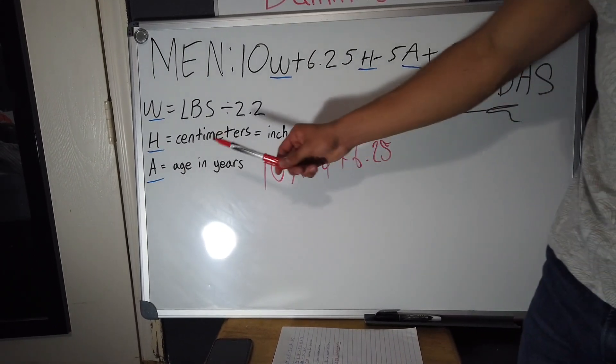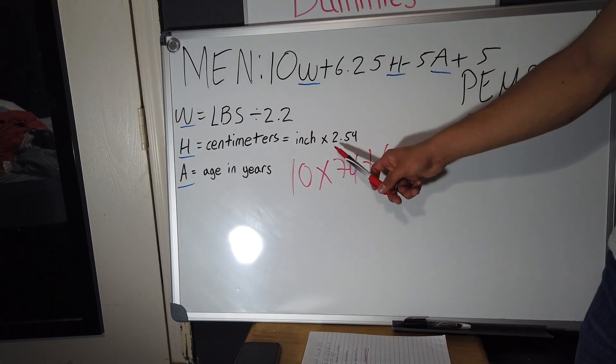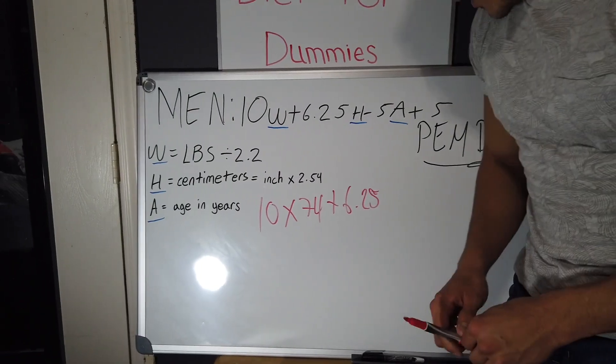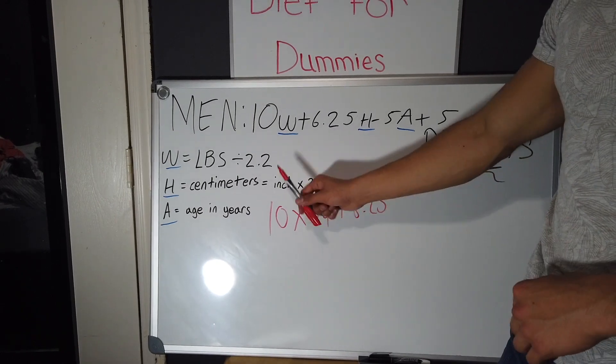So what you want to do is get your inches, so 5'7", and you multiply it by 2.54 and that will give you your centimeters.